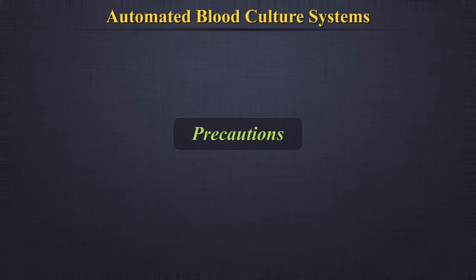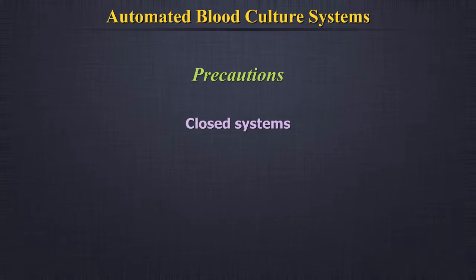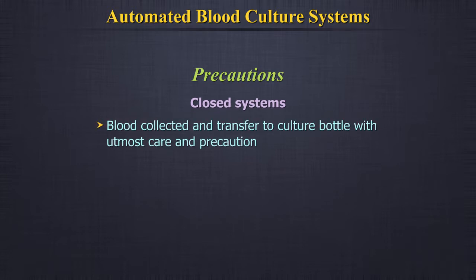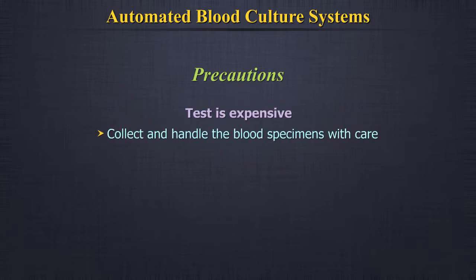Precautions. Continuous monitoring automated blood culture systems are closed systems — that is, they minimize contamination by minimal handling of the blood. Therefore, it is important that the blood is collected and transferred to the culture bottle with utmost care and precautions. Also, the test is expensive when compared to manual methods, so it is in the best interest of the patient as well as the laboratory to collect and handle the blood specimens with care.